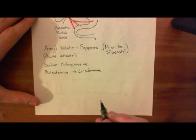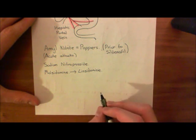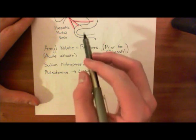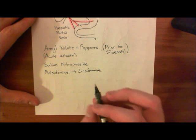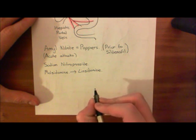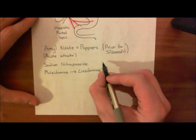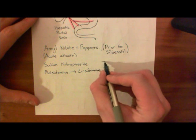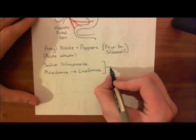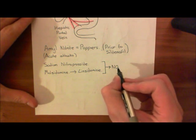Basically, what these drugs do is they are nitric oxide donors. In blood vessels, these drugs will start releasing nitric oxide — they'll undergo reactions which produce nitric oxide. Sodium nitroprusside and molsidomine don't require any enzyme to actually produce the nitric oxide, so these produce nitric oxide directly.